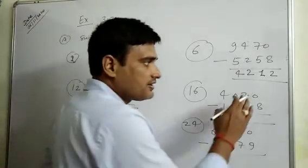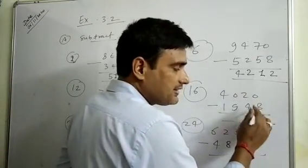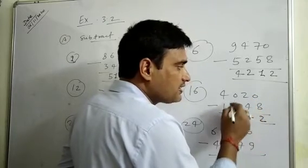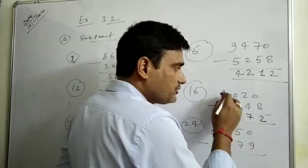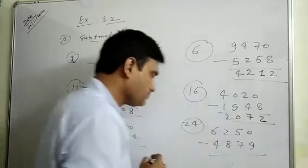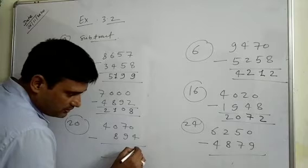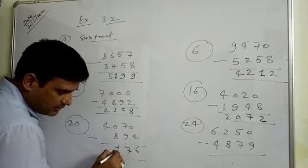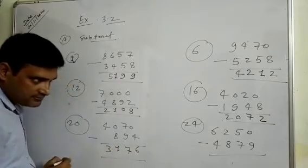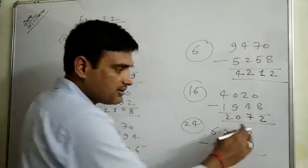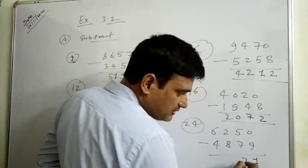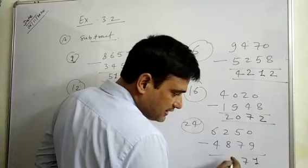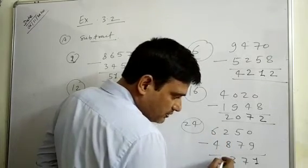Number 16: 0 is less than 8, so we take 1 carry making it 10. 10 minus 8 is 2. 11 minus 4 is 7, 9 minus 9 is 0, 3 minus 1 is 2. Answer: 2072. Number 20: 10 minus 4 is 6, 16 minus 9 is 7, 9 minus 8 is 1, and 3 remains. Answer: 3176. Next: 11 minus 8 is 3, and 5 minus 4 is 1.